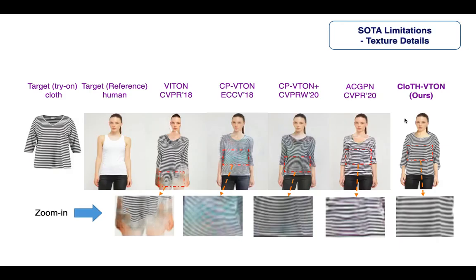One of the main limitations of state-of-the-art image-based virtual try-on methods is that they cannot preserve the full texture details of the target cloth into the final output. As you can see in this comparison, none of the previous methods are able to preserve textures accurately. They produce blurry and distorted textures, working better for mono-colored target cloths but not with complex textures.